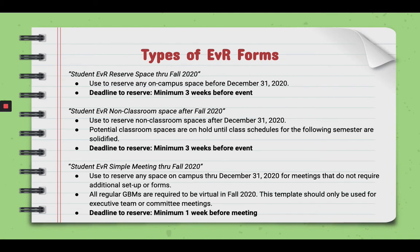Next we have the Student EVR Simple Meeting through Fall 2020. Use this to reserve any space on campus through December 31st, 2020 for meetings that do not require additional setup or forms. All regular GBMs are required to be virtual in fall 2020, so this template should be used only for executive team and committee meetings. The deadline to reserve is a minimum of one week before the meeting.